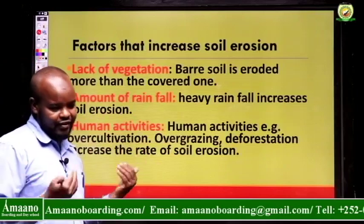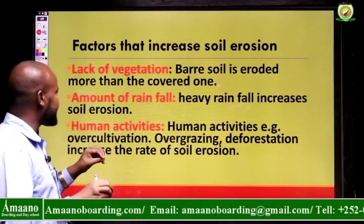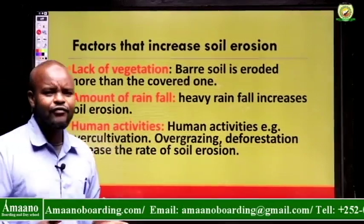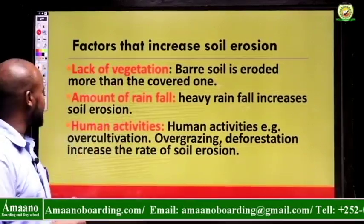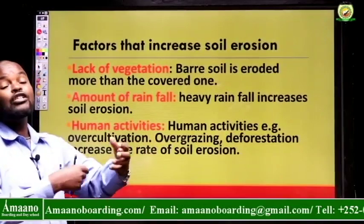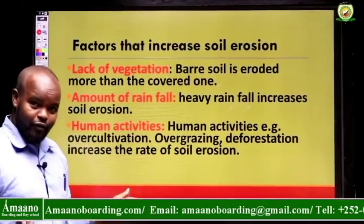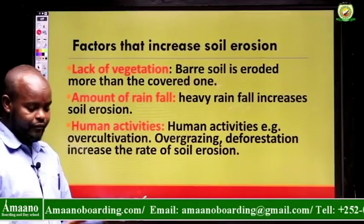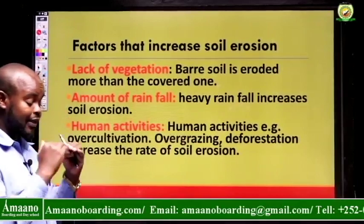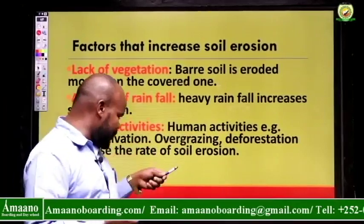Third, lack of vegetation — if there is no vegetation cover and the land is bare, it is very fragile and prone to erosion. Fourth, amount of rainfall — if it rains very heavily, it will wash away the top fertile soil. Fifth, human activities such as over-cultivation, overgrazing, and deforestation — the cutting down of trees — also make the soil at risk for erosion. All these factors increase the rate and speed of soil erosion.